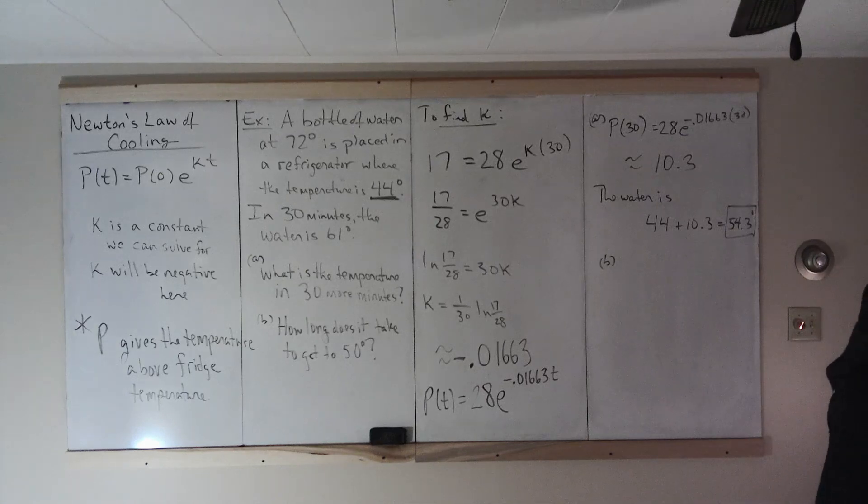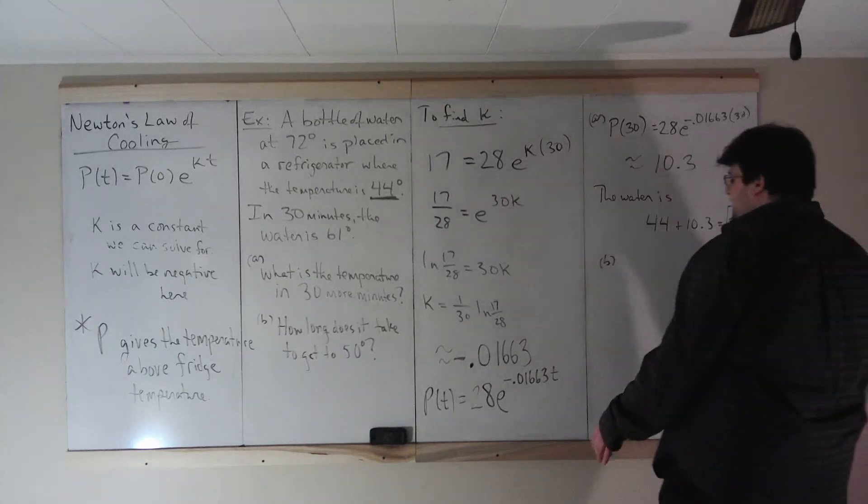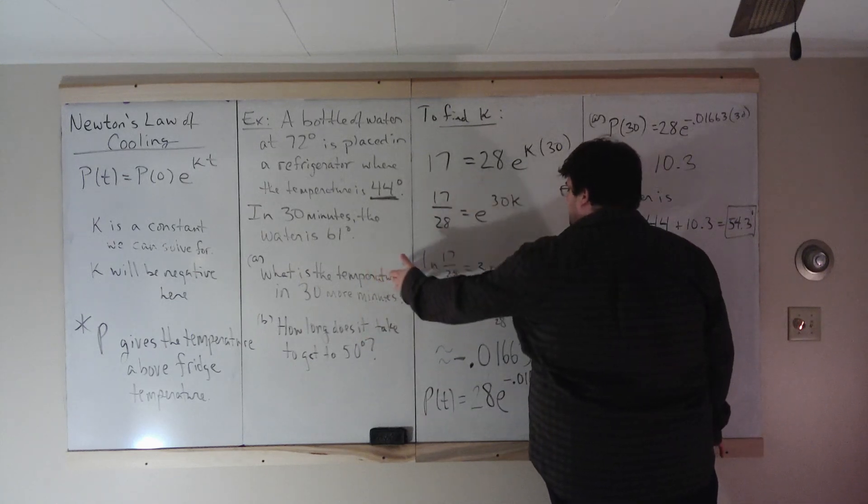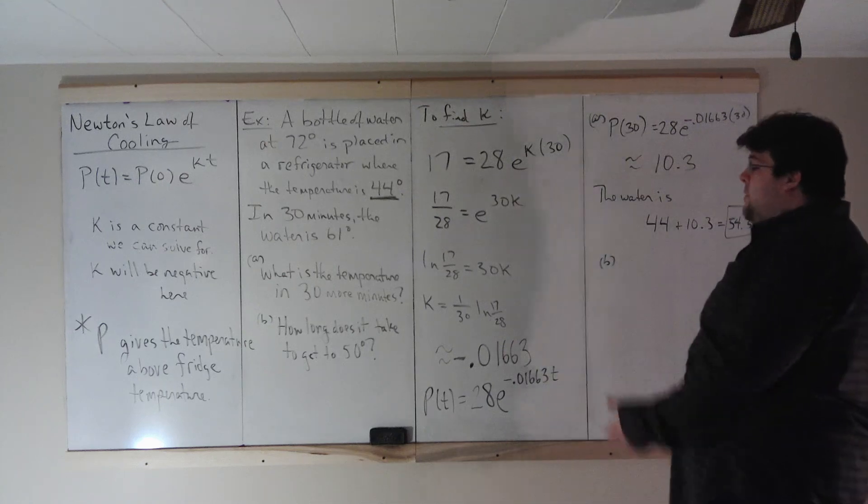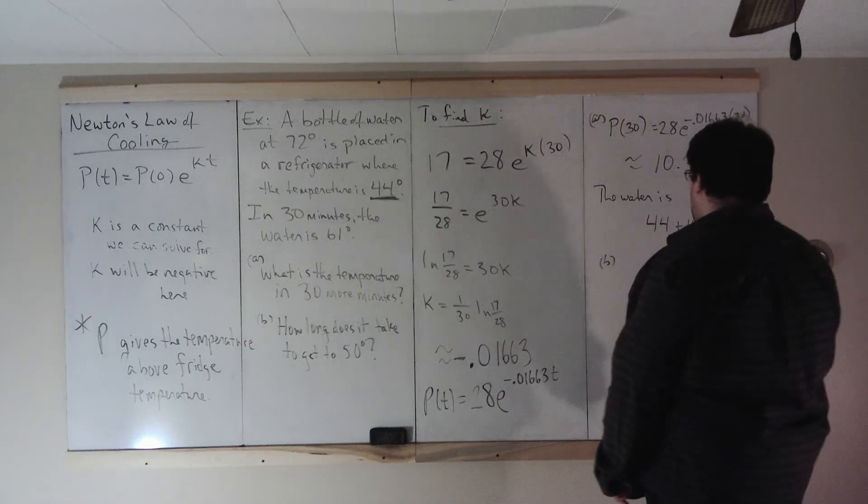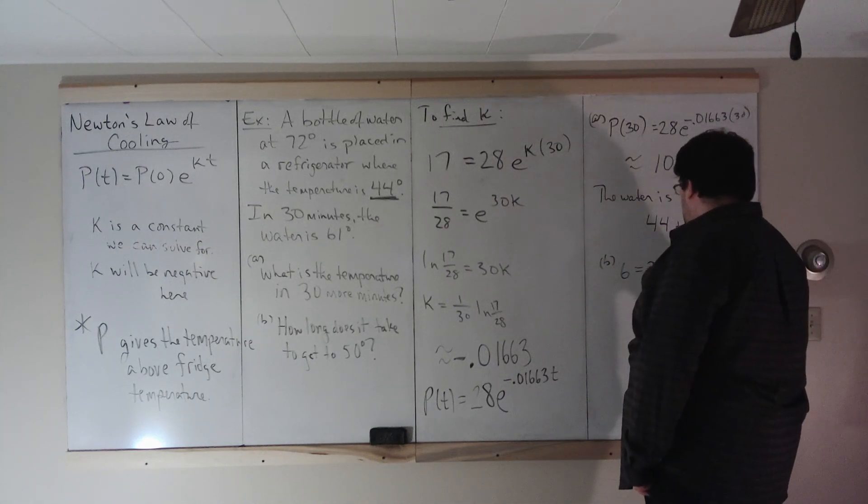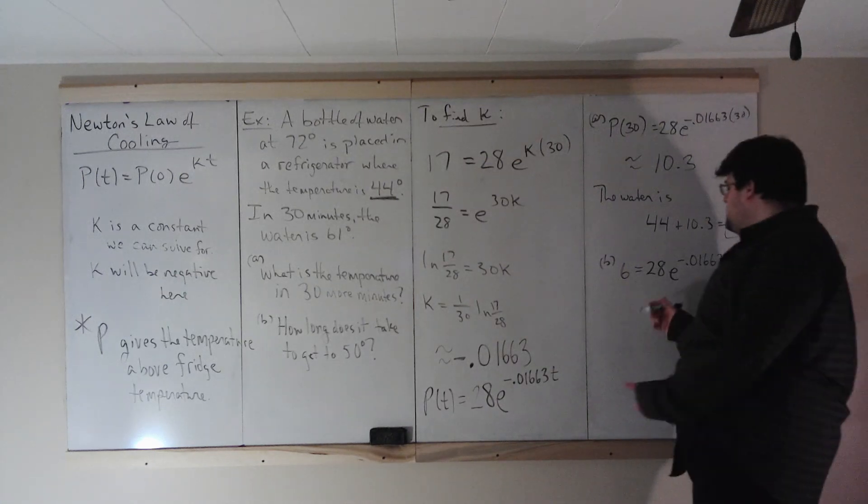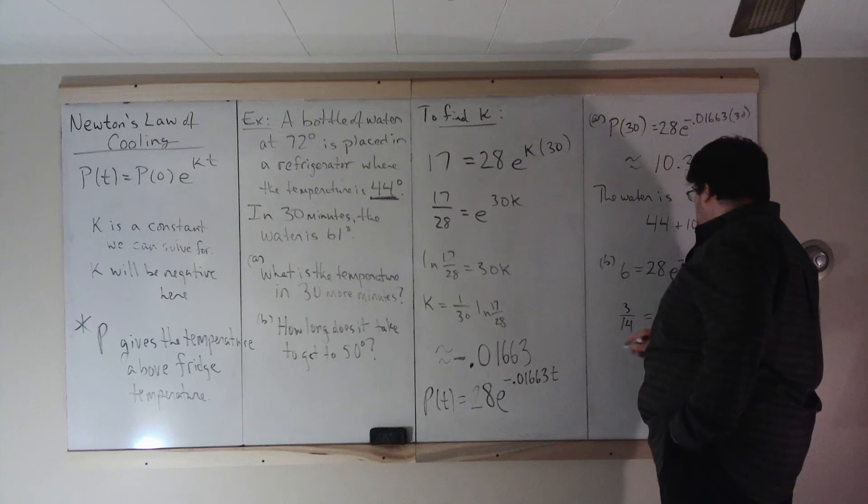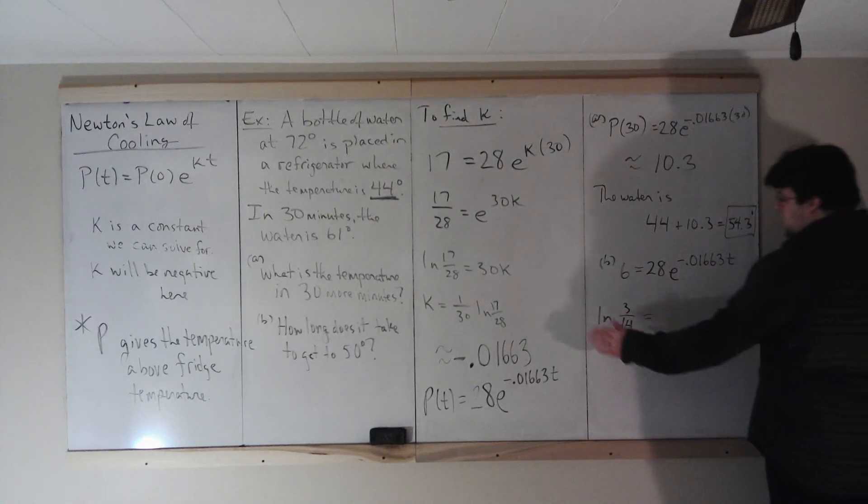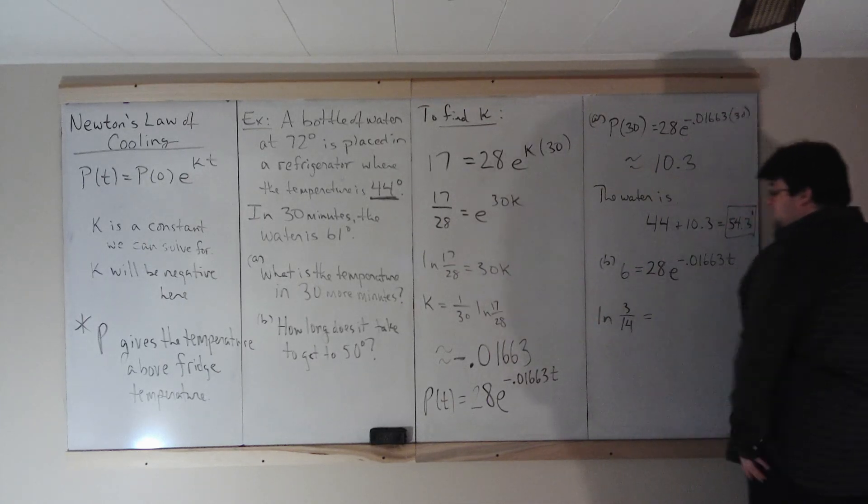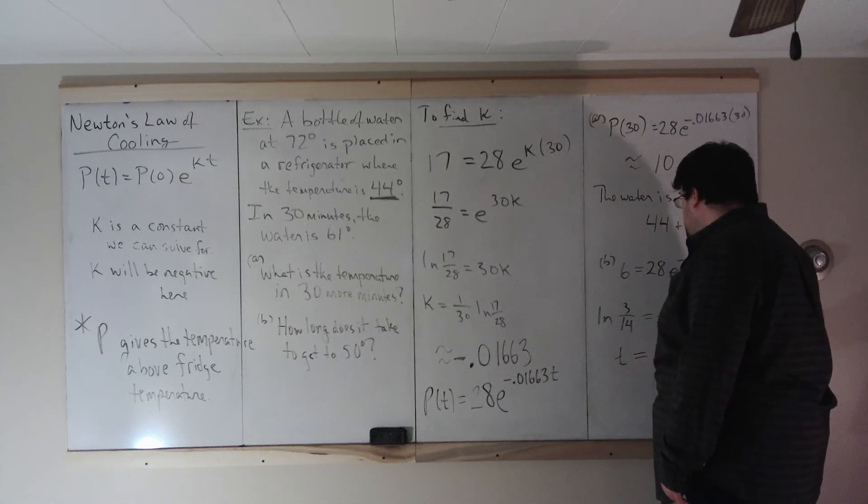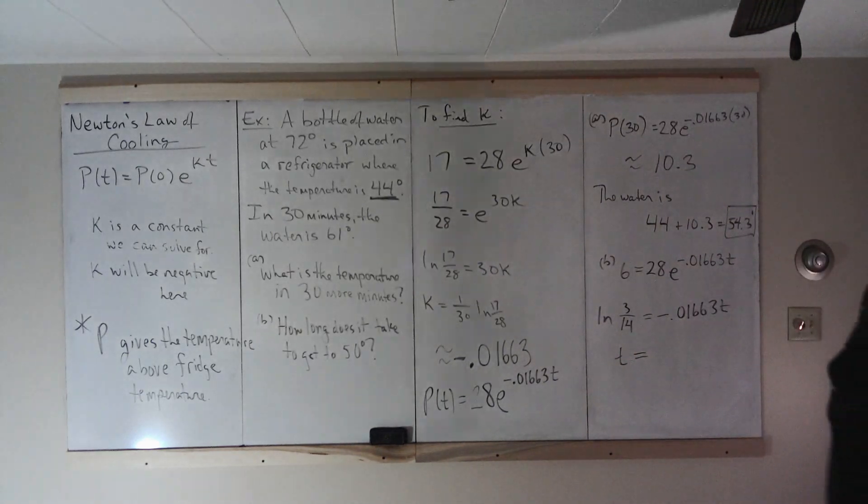And what about part B? How long does it take to get to 50 degrees? Well, in part A, our variable was P(t). We wanted to solve for that. Part B, our variable is time. We're looking to figure out a time at which the fridge is 50 degrees. So we need to solve this equation. Solve this for T. Divide by 28. What do you get? 3 14ths divide by 28. You get 3 14ths is E to this number. Logarithm of both sides gets rid of the E. Divide by that and you get T equals approximately 92.6 minutes.